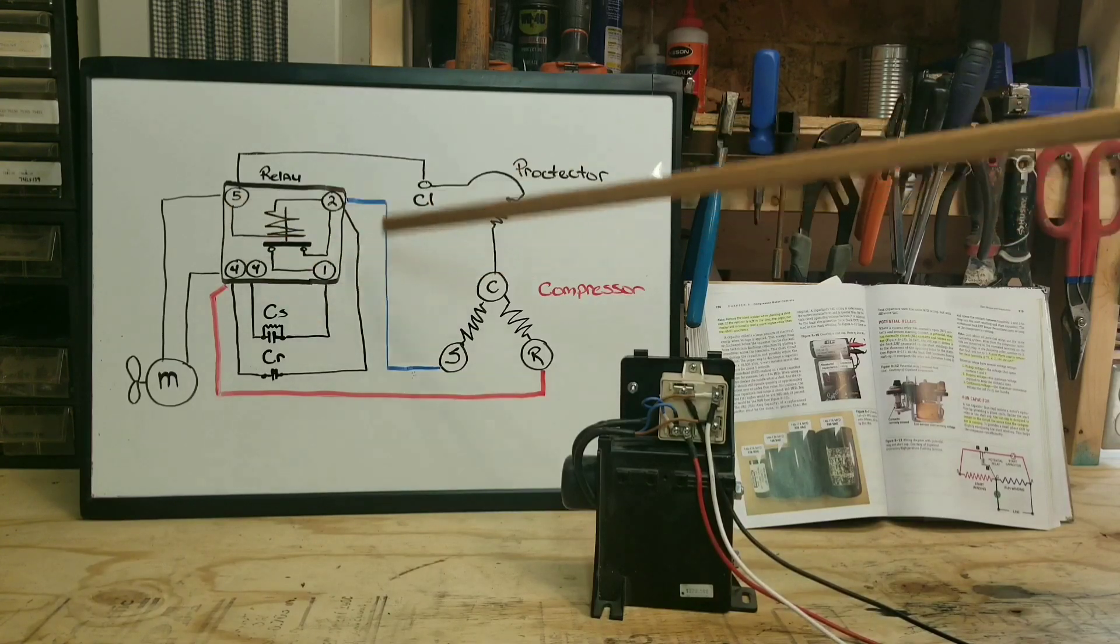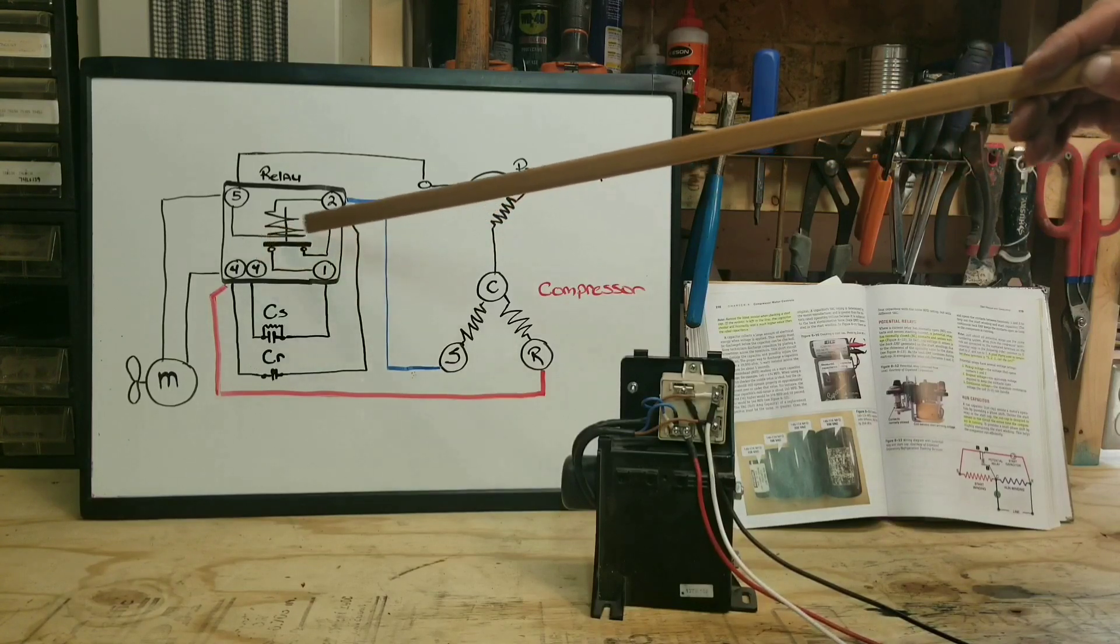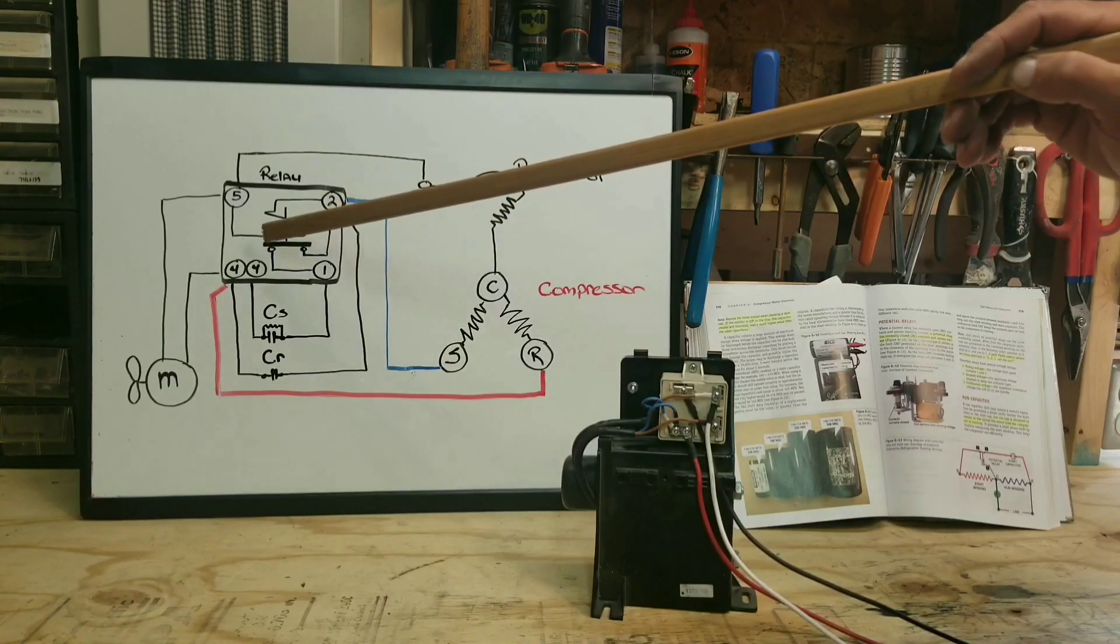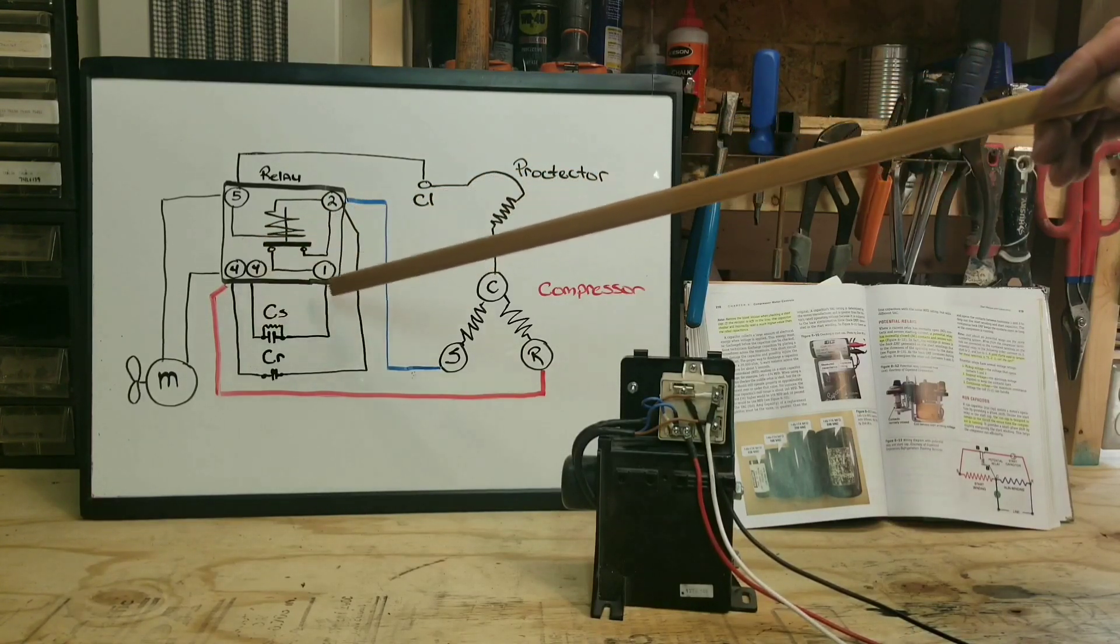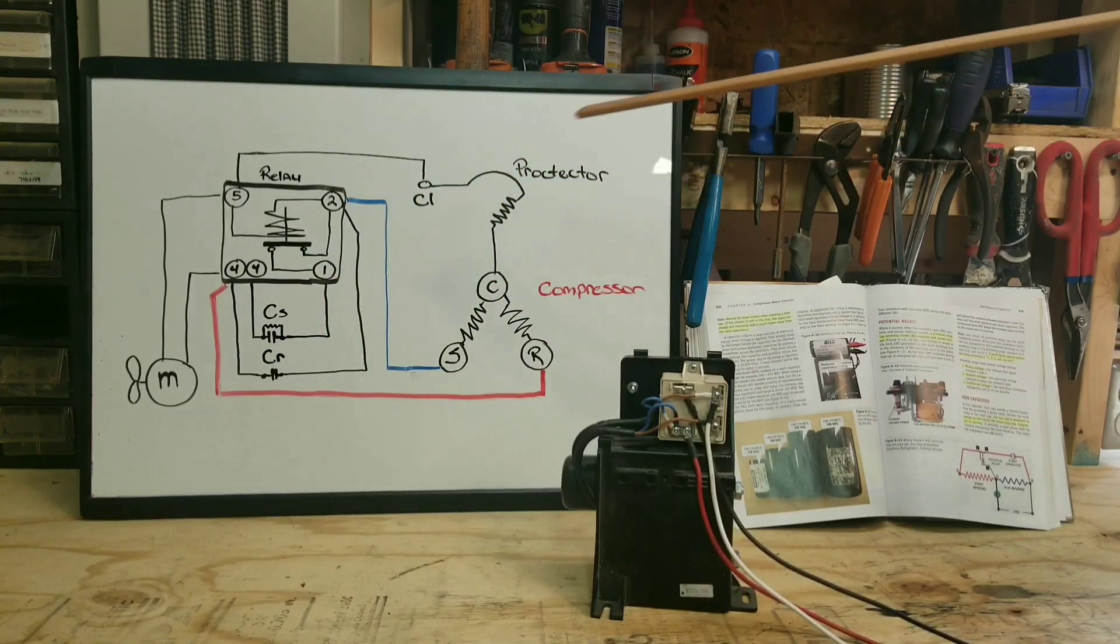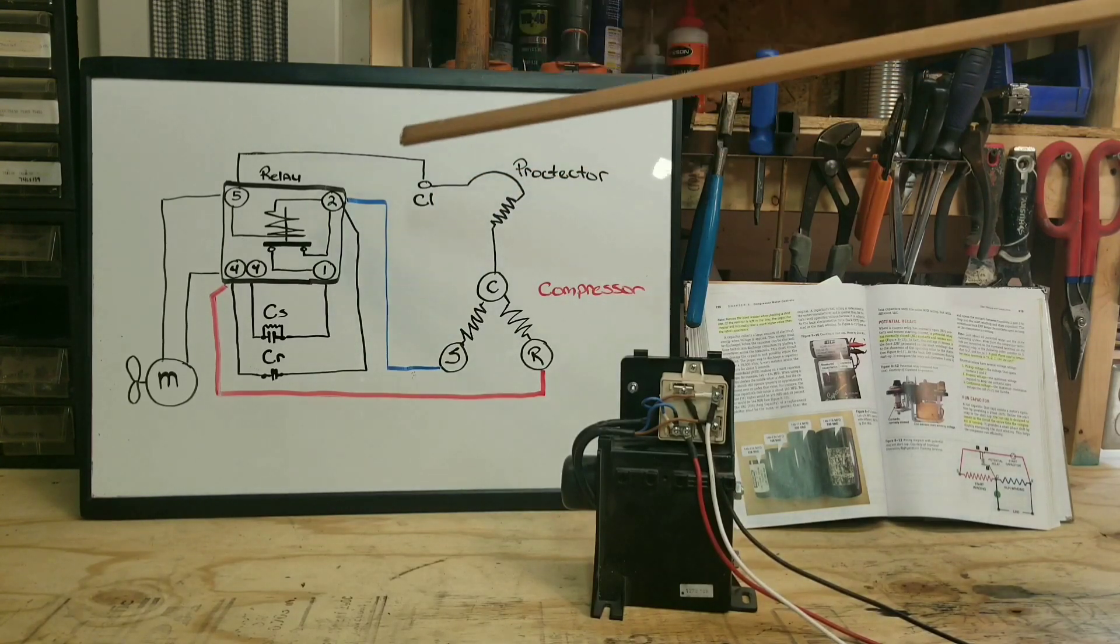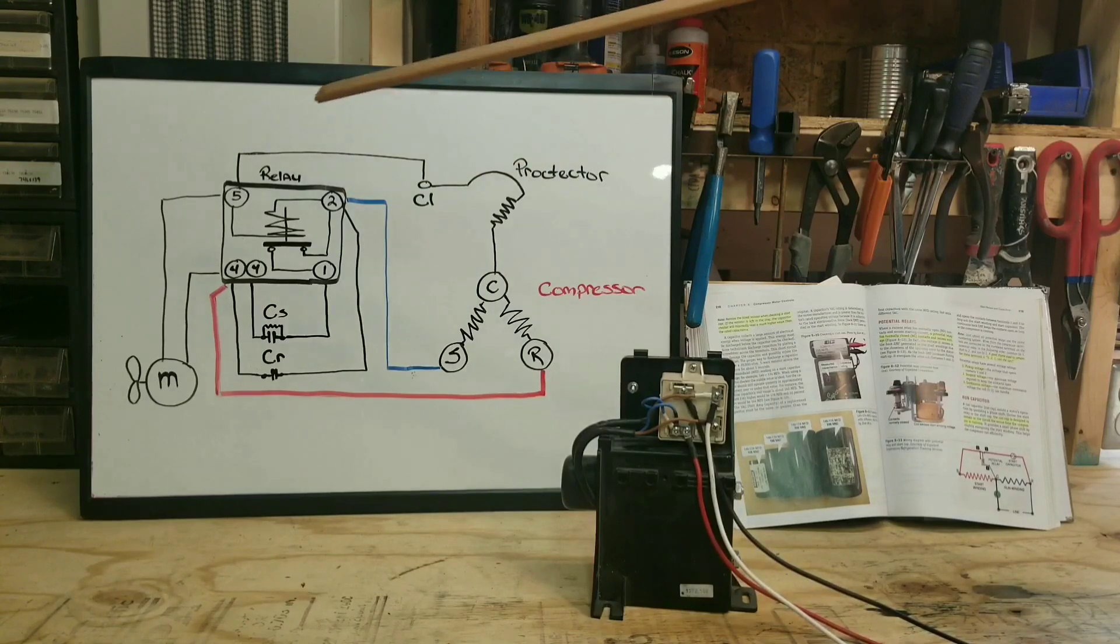And what happens is we get a call for cool, condensing unit kicks on. This is closed to begin with, so our start capacitor kicks in, helps turn our compressor over. We start running. Once the compressor is about three quarters of the way going—not 100% full speed, but about three quarters of the way to full speed—